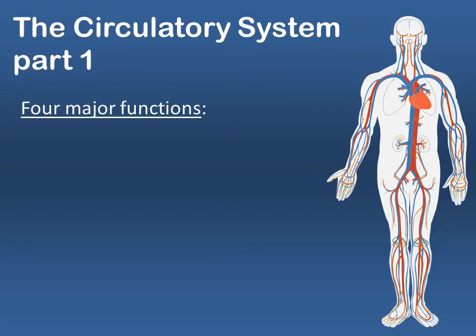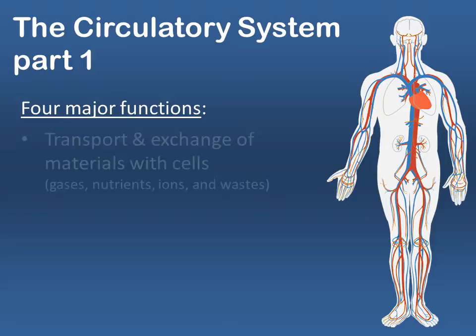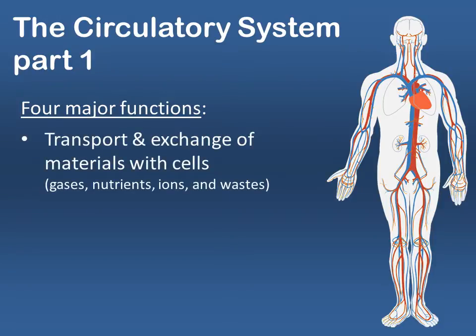It's important to know, as you learn organ systems, what their major functions are. The major functions of the circulatory system can be broken into four major groups. The first is the transport and exchange of materials with cells — arguably one of the most important functions, where cells are able to pick up gases and nutrients, and dump off certain wastes into the bloodstream.